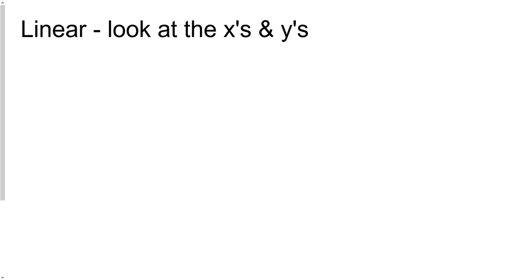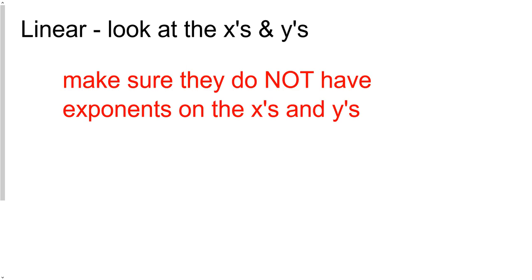So if it's linear, we know that it's going to be a straight line, and you need to look at the x's and the y's. And if the x's and y's don't have exponents, you can almost guarantee that it is linear.